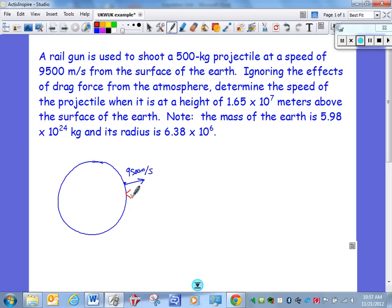And then we have this height. Note that it is a height. Be careful about that. Height means distance above the surface of the Earth, not distance from the center of the Earth. And that's a significant thing in this problem. So the height, 1.65 times 10 to the 7th meters above the surface of the Earth.